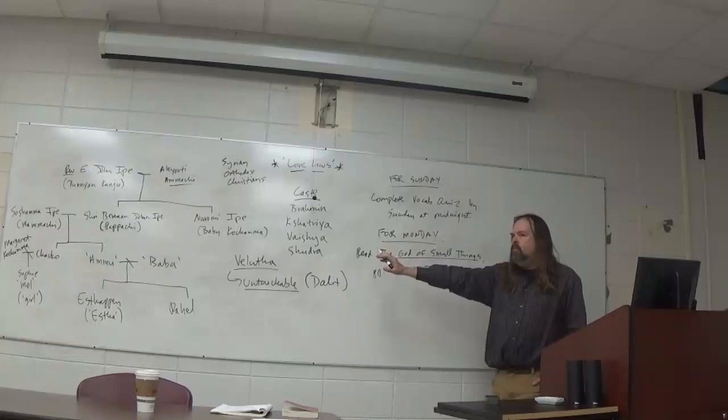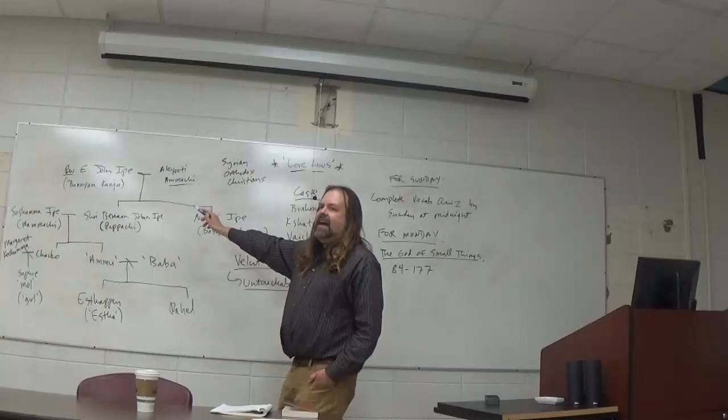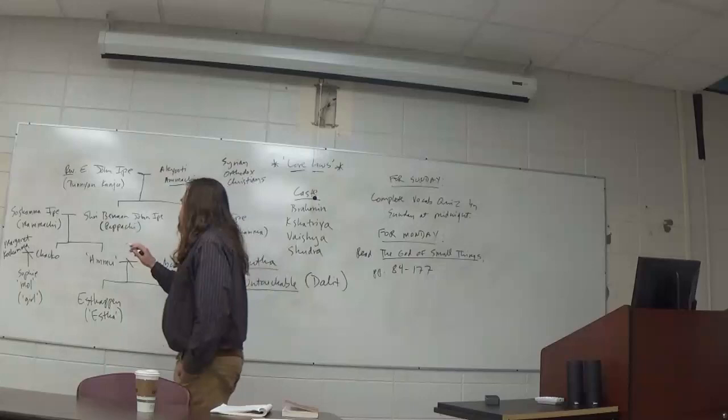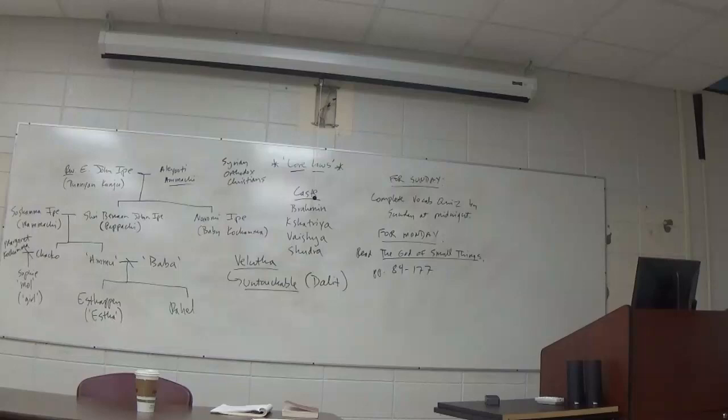That Velutha is someone that members of a high-class Syrian Orthodox Christian family aren't, someone they're not supposed to touch. And notice, too, that this younger generation have just about all married kind of outside the approved clan. That Chaco married an English woman, but that ended in divorce. And Amu and Baba's mixed religion marriage also ended in divorce.